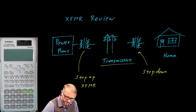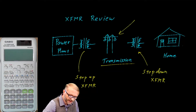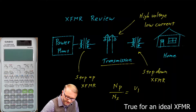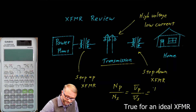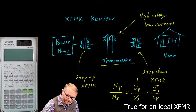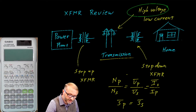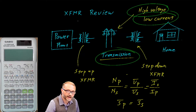So on the transmission line, you have high voltage but low current. This gets back to our transformer rules: turns on the primary over turns on the secondary equals the voltage on the primary over the voltage on the secondary, which equals — be careful, currents are upside down — the current in the secondary over the current in the primary. As voltage goes up, current will go down. The power in the primary of the transformer equals the complex power in the secondary. High voltage and low current on the transmission line means you don't have high I²R losses.